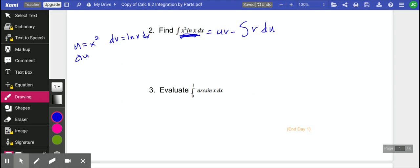Which of course you can take the derivative of that. That's 2x dx. And then v, you would need to take the antiderivative of this. We can't do that. We can't do the antiderivative of natural log. Not yet. So that was a poor choice.